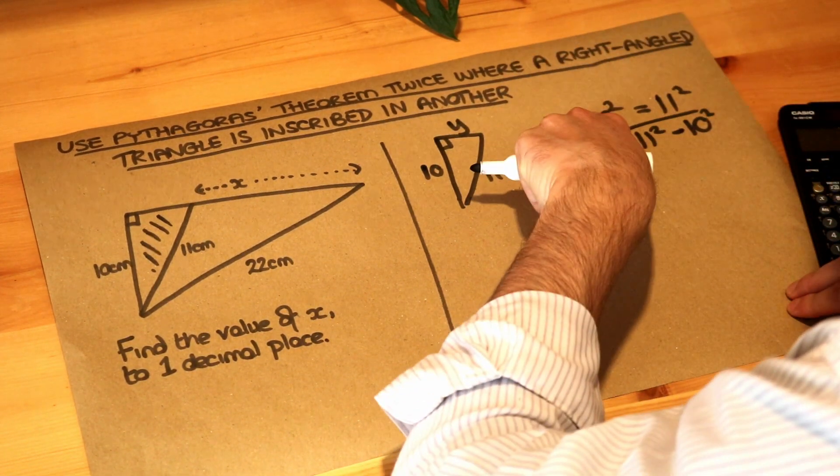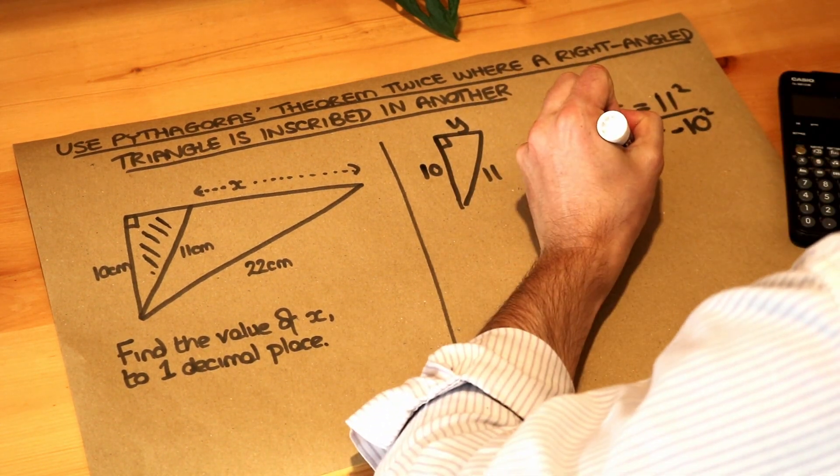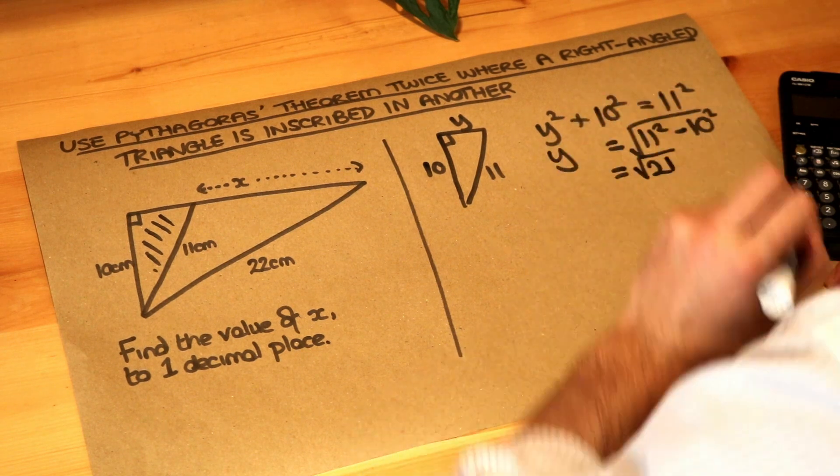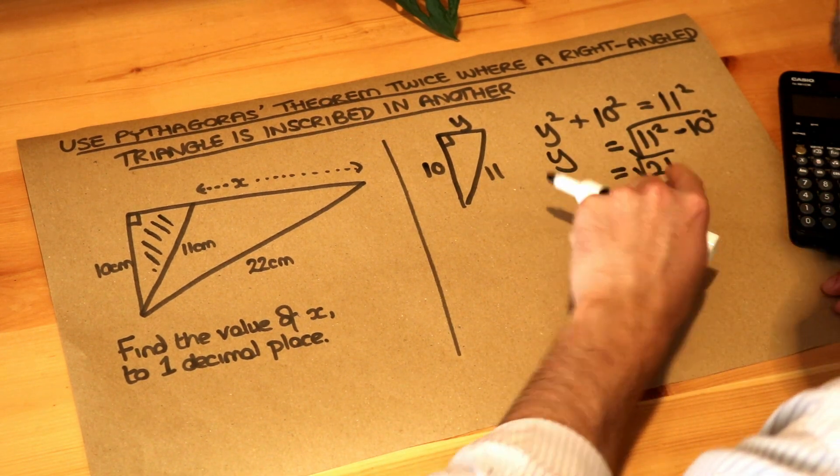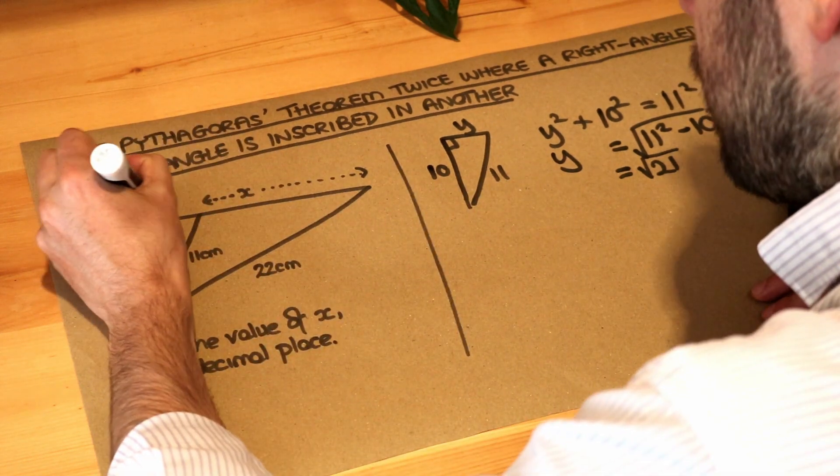And if you're comfortable going from this to this, then that's absolutely fine. So that's going to be the square root of 21. I'm going to leave y as root 21 because then we can use it exactly on our calculator. So we now know this is root 21.